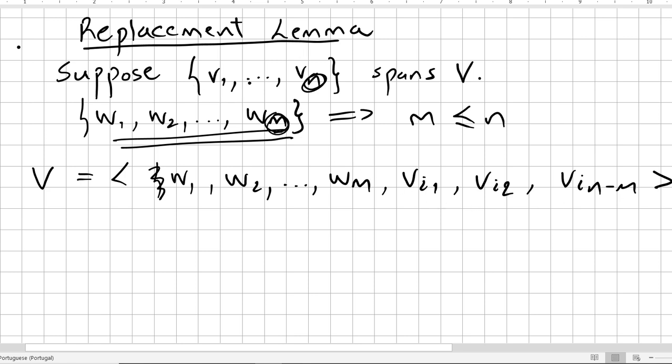So if this one spans V, that means that if we have any other set with n plus 1 vectors, they have to be dependent. If a space is spanned by a set of n vectors, any other set with n plus 1 vectors will be dependent.